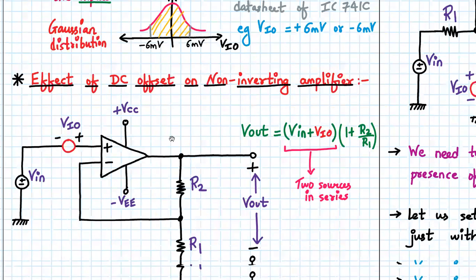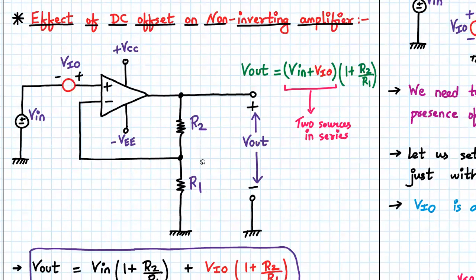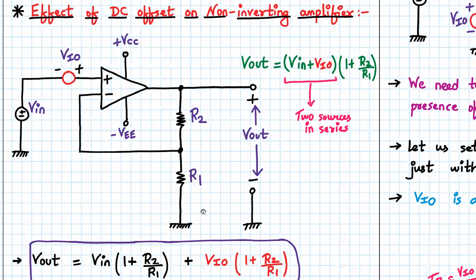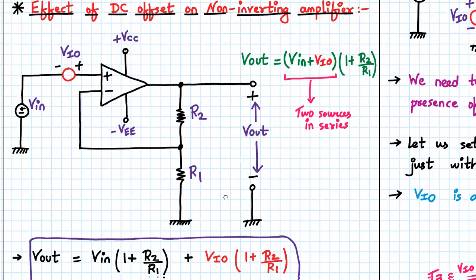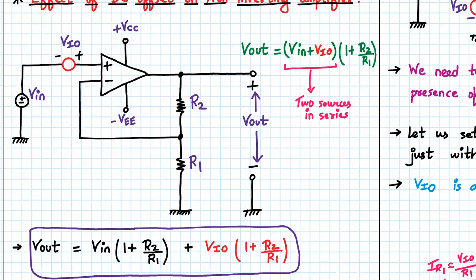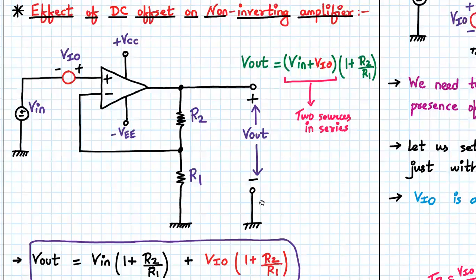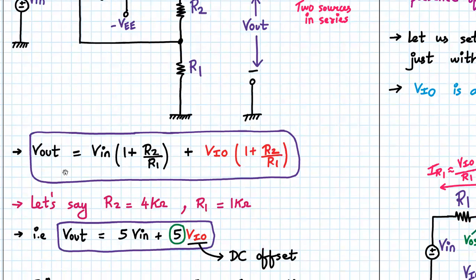Now we have seen what input offset voltage or DC offset voltage is. Now we apply this concept on the non-inverting amplifier. Let's study the effect of DC offset on the non-inverting amplifier. This is my normal non-inverting amplifier with just one change: VIO being added at the input terminal in series with the Vin source. With this, we can say that the two sources, VIO and Vin, are in series. The output formula for a non-inverting amplifier is Vout = (1 + R2/R1) × Vin, but now Vin and VIO are in series, so the output will be Vout = (Vin + VIO) × (1 + R2/R1).